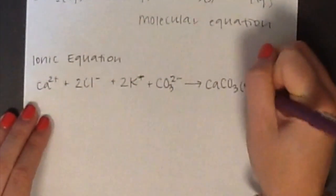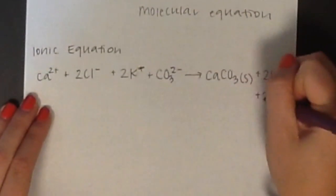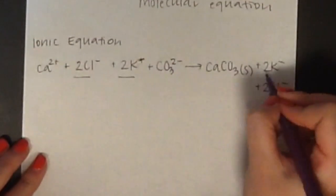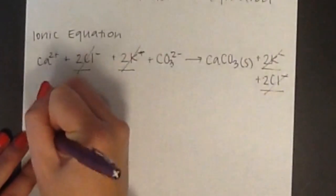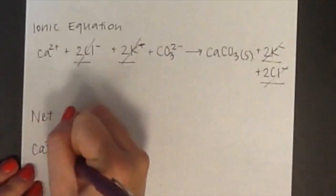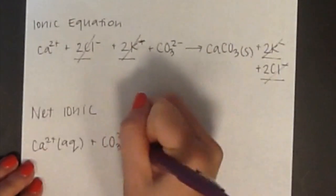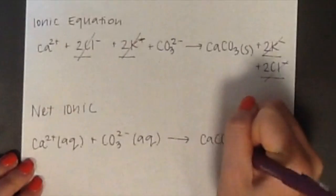Spectator ions are ions that exist as a reactant and a product. In this case, our spectator ions are chloride and potassium. Our final net ionic equation is Ca²⁺ and CO₃²⁻ forming calcium carbonate.